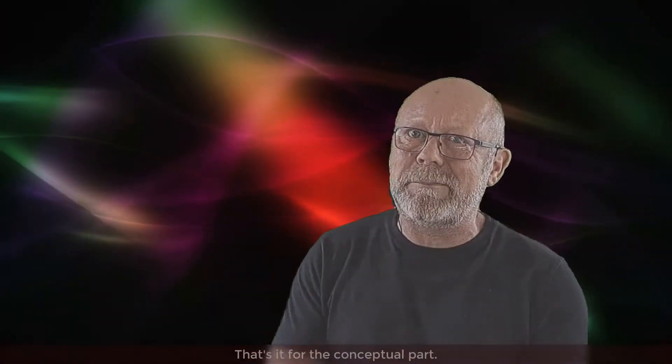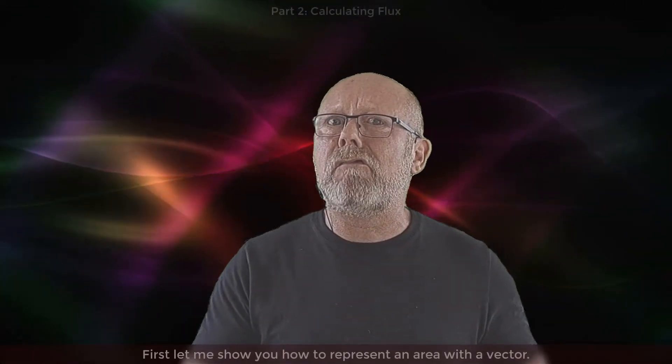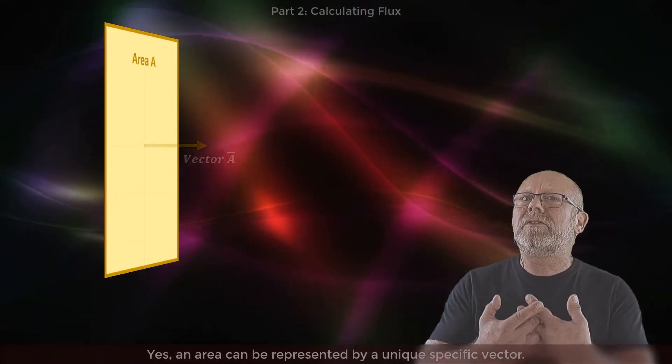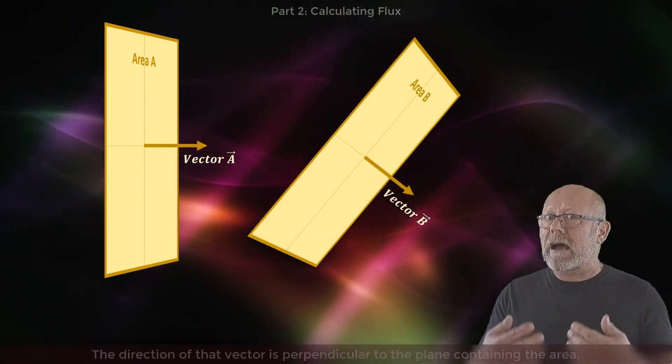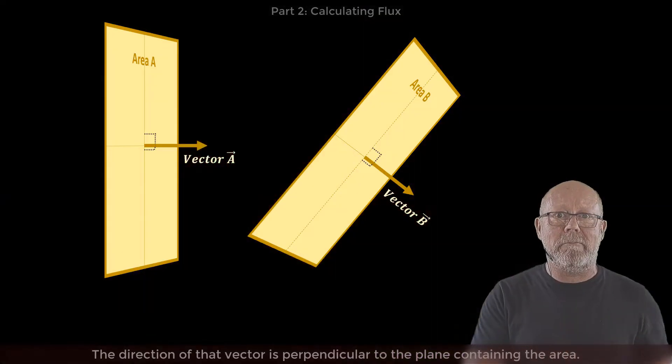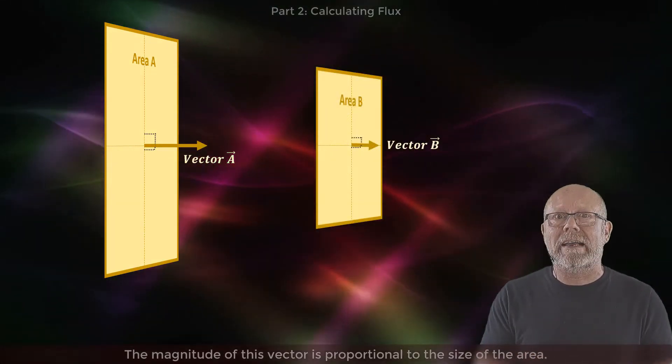Okay, that's it for the conceptual part. Let's look now at how to calculate a flux. First, let me show you how to represent an area with a vector. Yes, an area can be represented by a unique specific vector, the area vector. The direction of that vector is perpendicular to the plane containing the area. The magnitude of this vector is proportional to the size of the area.